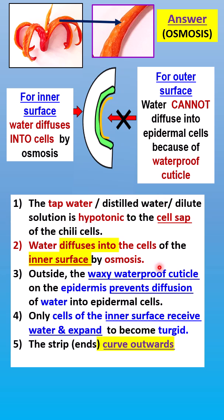Next, explain what happens to the water: water diffuses into the cells of the inner surface by osmosis. For the chili strip, there are two surfaces — the inner surface, which is pale red, and the outer surface, which is shiny and covered by a waxy cuticle. Since the inner surface has no waxy cuticle, water diffuses easily into those cells, causing them to receive water and expand.